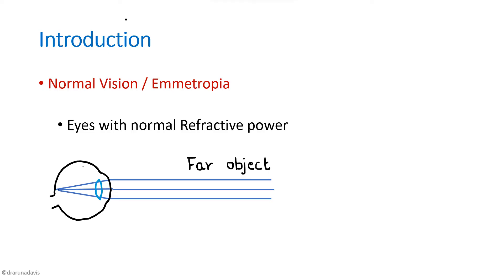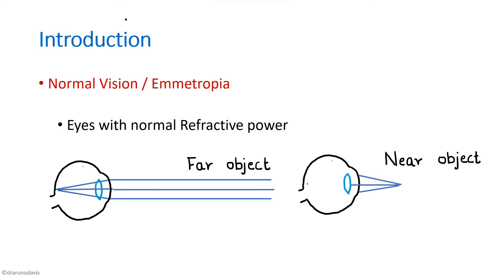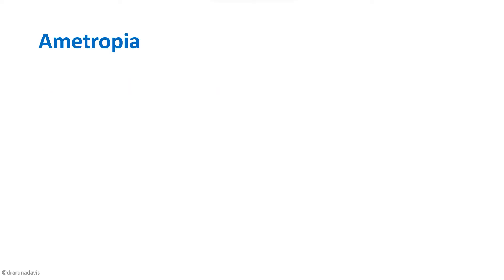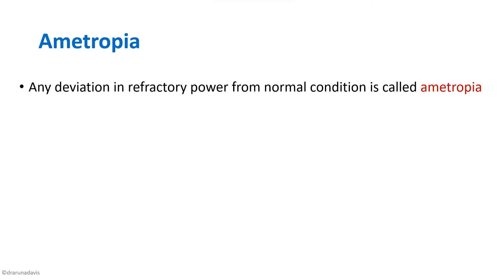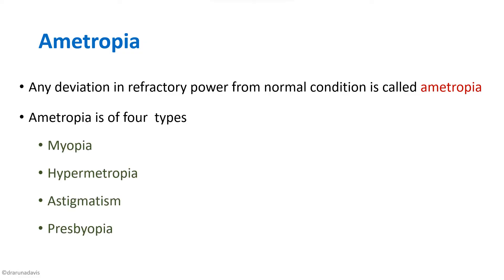Such normal eyes will also be able to focus rays coming from a near object and converge them onto the retina. So first you write what normal vision is, then we write about errors of refraction. Any deviation in the refractive power from normal condition is called ametropia. Ametropia is of four types: myopia, hypermetropia, astigmatism, and presbyopia. Let us see each one by one.